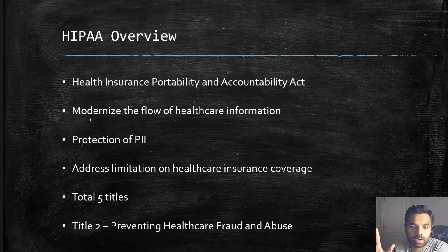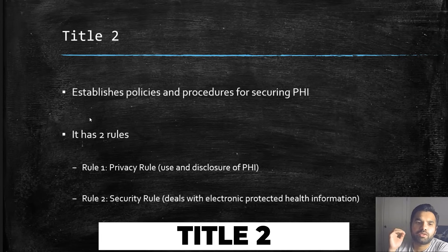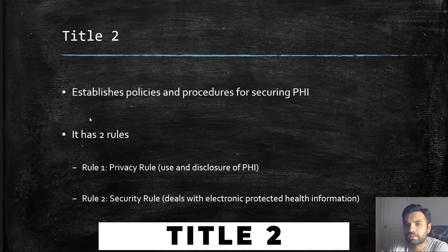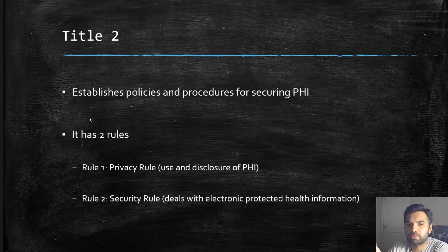There are in total five titles in HIPAA; however, we are only going to focus on Title Two, which focuses on preventing healthcare fraud and abuse. Looking at Title Two in more detail, all compliance frameworks share risk assessment in common, and risk assessment tells you what policies and procedures you need to write. Title Two establishes policies and procedures for securing PHI — for example, a privacy policy or access control policy.